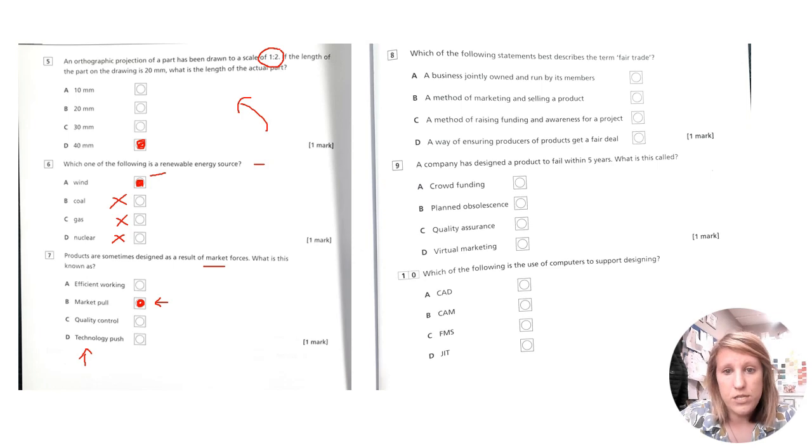Which of the following statements best describes the term fair trade? You will know this from key stage three geography, maybe some science. So a business jointly owned and run by its members? No, that's a cooperative. A method of marketing and selling a product? No. A method of raising funding and awareness for a project? That's almost like, what's it called? Like when you do like a startup, like a Kickstarter. It's D, isn't it? A way of ensuring producers of products get a fair deal. A company has designed a product to fail within five years. What is this called? This has come up in previous questions. It's called planned obsolescence. When you plan something to fail after a certain amount of time, it's called planned obsolescence. Crowdfunding. Crowdfunding, that is that, I think.